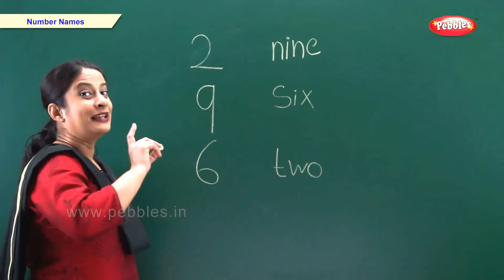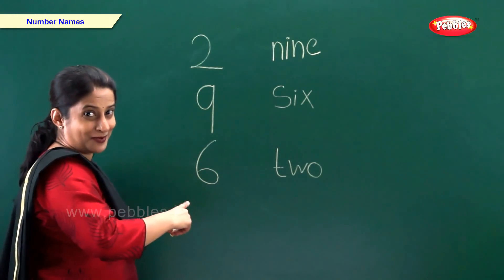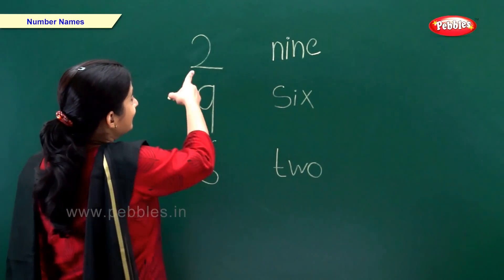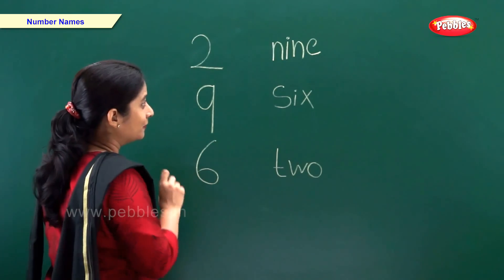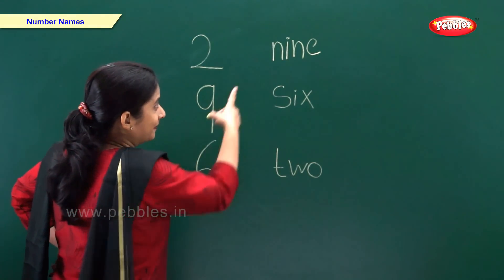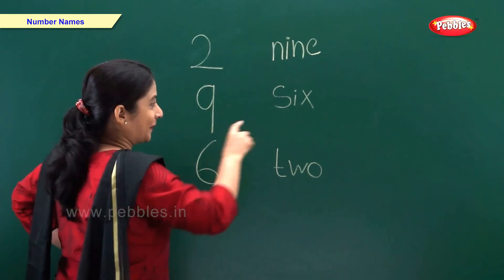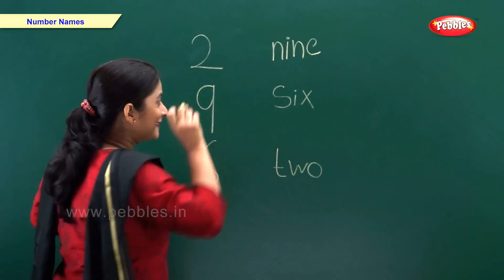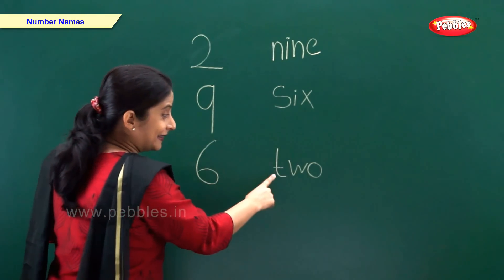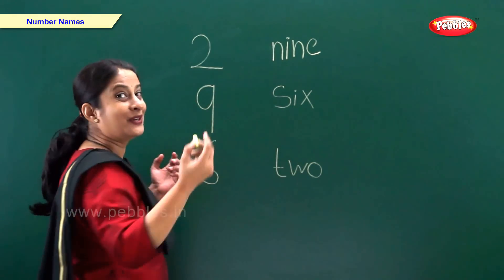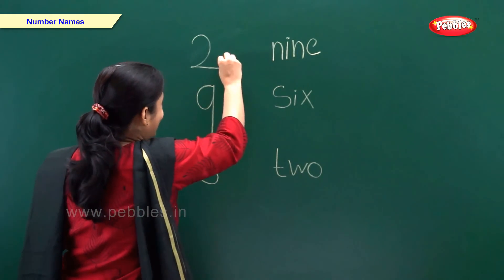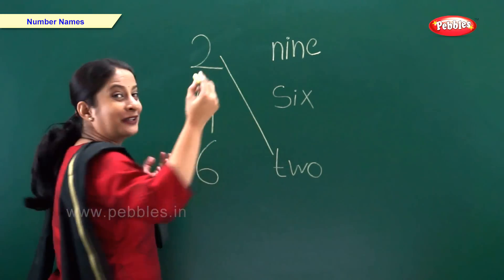Friends. Now let's match these numbers. This is number 2. So where is the number name? N I N E. 9. No. No. S I X. 6. No. T W O. 2. So let's match. 2.